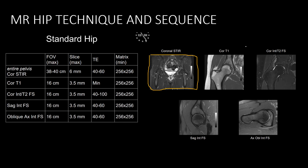Then we should have sagittal PD fat sat. The labrum is very well seen in sagittal. Then we should have oblique axial. If you cut from here, we call it oblique axial images. That is very good for the femoral head-neck junction — we call it for the FAI or bony bump. The labrum is also better seen in the oblique axial images. We can also have axial images, either PD fat sat or T2 fat sat axial.